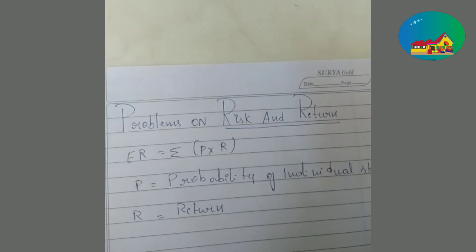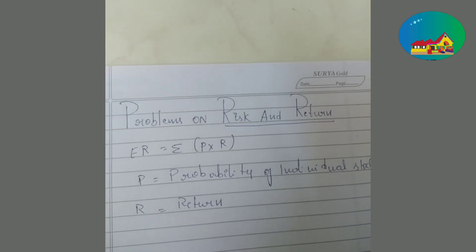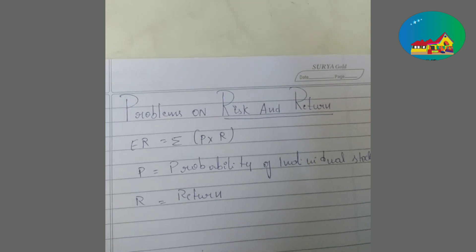Risk is measured by standard deviation. Standard deviation is the square root of variance. So let us move on to the first problem.